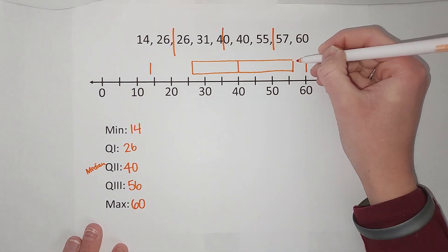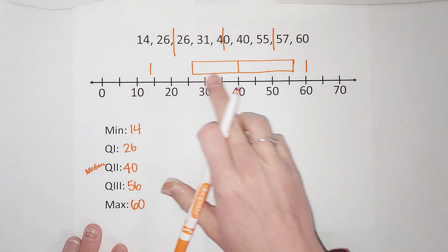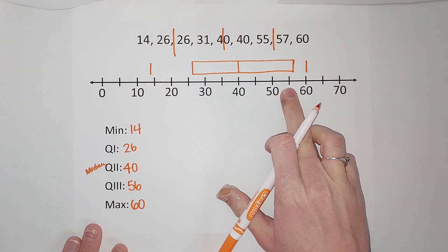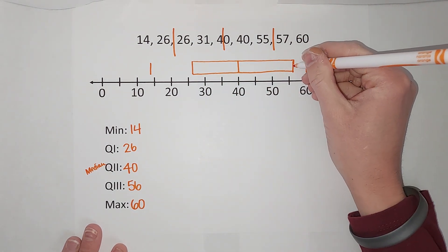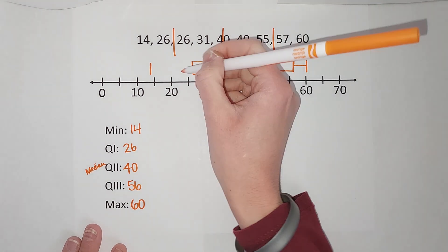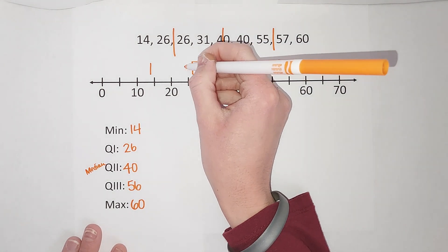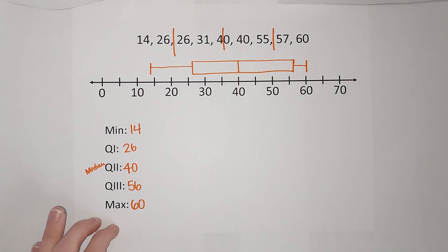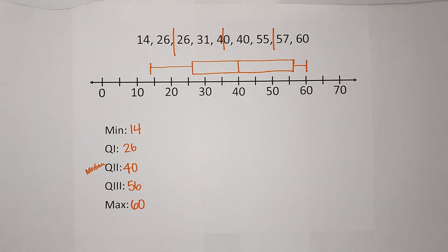But I'm not going to leave it like that. The middle three values — the first, second, and third quartiles — we draw a box around. Then we add the whiskers that extend out to the maximum and the minimum, and we're done! If you need an example with outliers, I'll link a playlist in the corner with lots of videos including ones with outliers. Hopefully that made sense — bye!